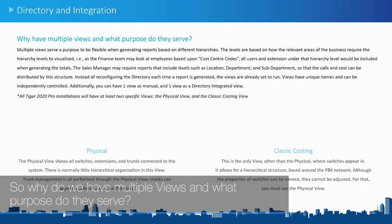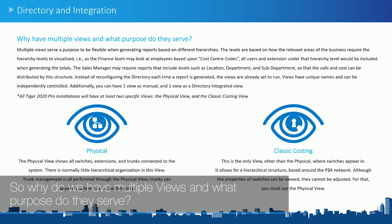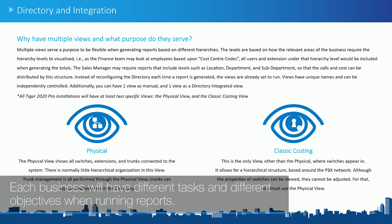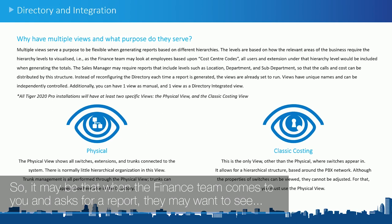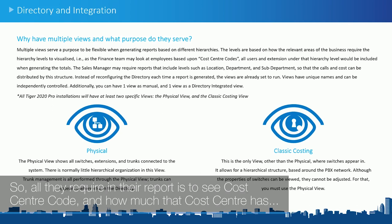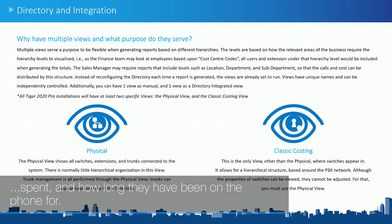So why do we have multiple views and what purpose do they serve? By having multiple views within Tiger 2020, it allows you to run reports based upon different hierarchies. Each business will have different tasks and different objectives when running reports. For example, when the finance team asks for a report, they may want to see it based upon cost centers — just the cost center code, how much that cost center has spent, and how long they've been on the phone.